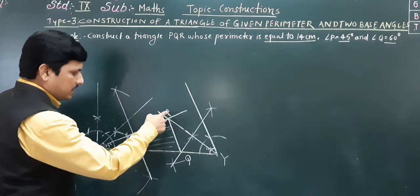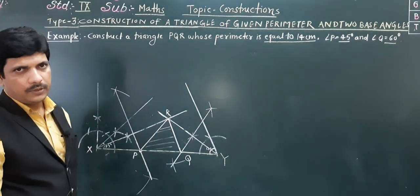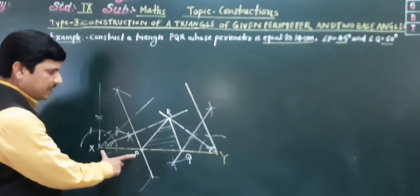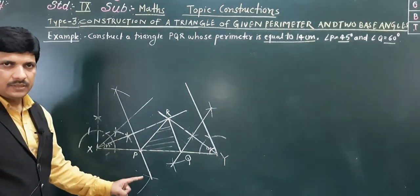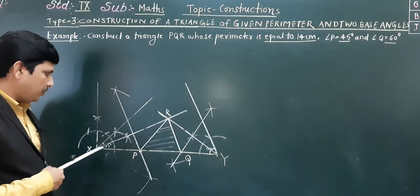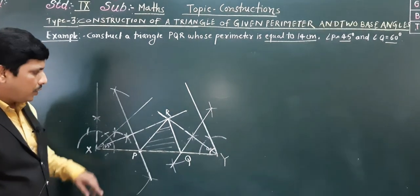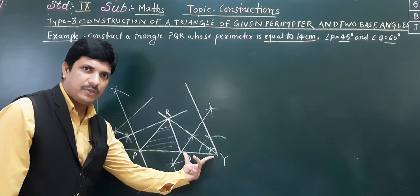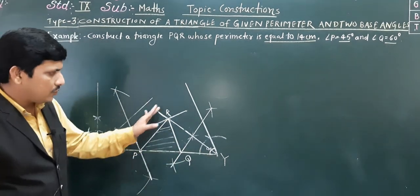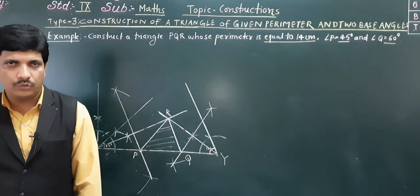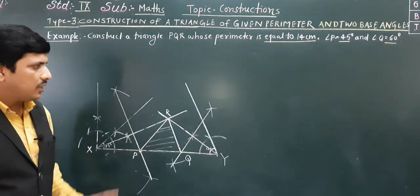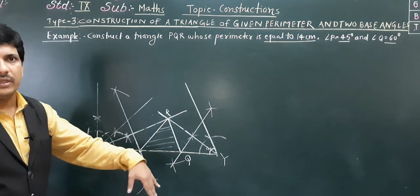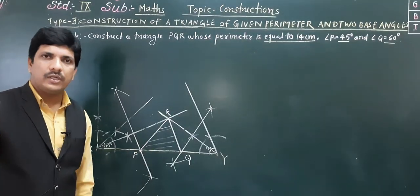To prove it: PX equals PR because P lies on the bisector of angle X, so PR and XP are the same length — both are parts of the 14 centimeters. That part and this part are equal, so the total is 14 centimeters. That is how we write the justification. You will write the steps of construction and the justification in your notebook. Whatever we have done, we need to write it out. Thank you.